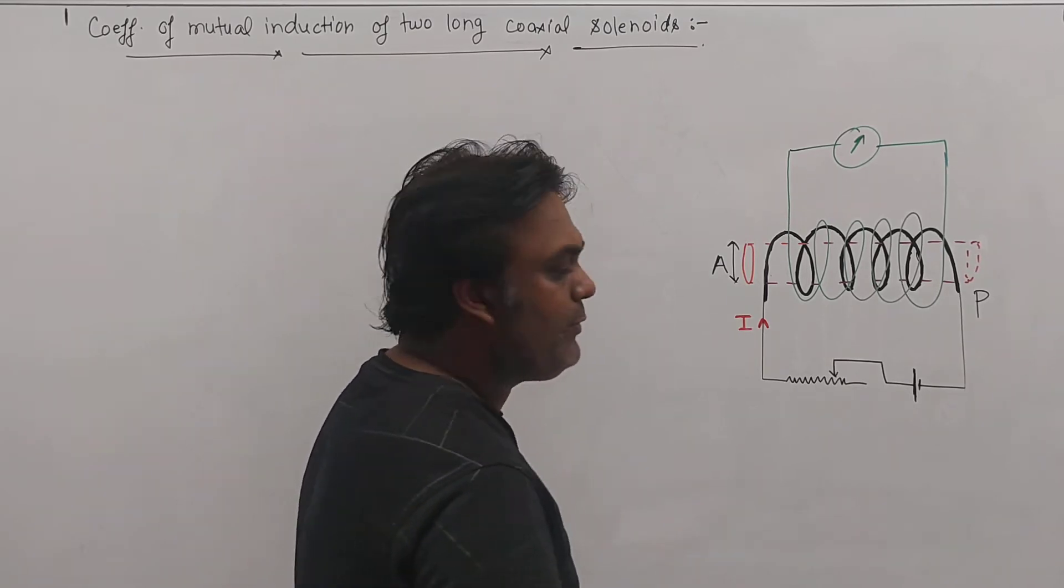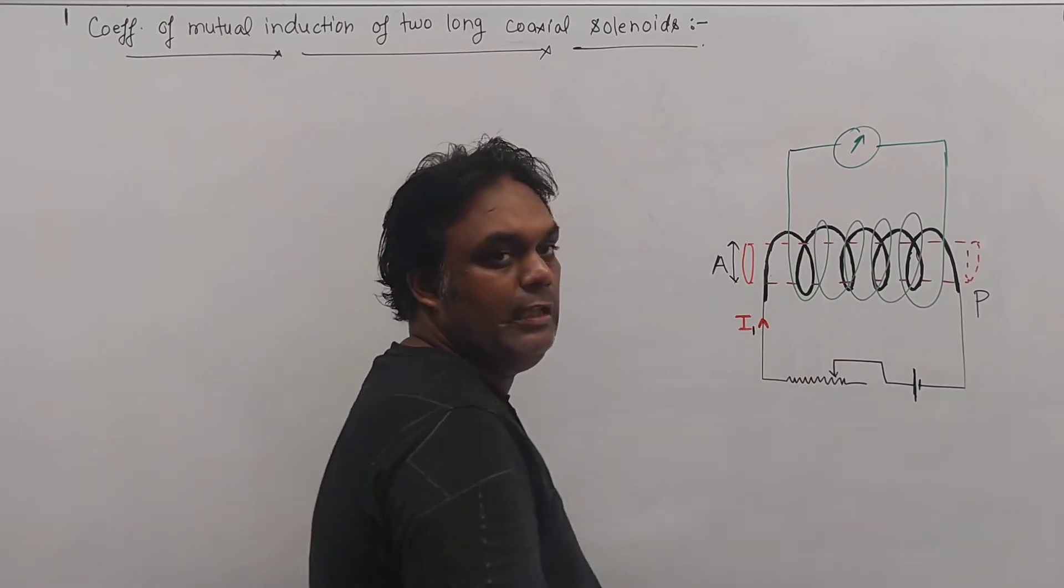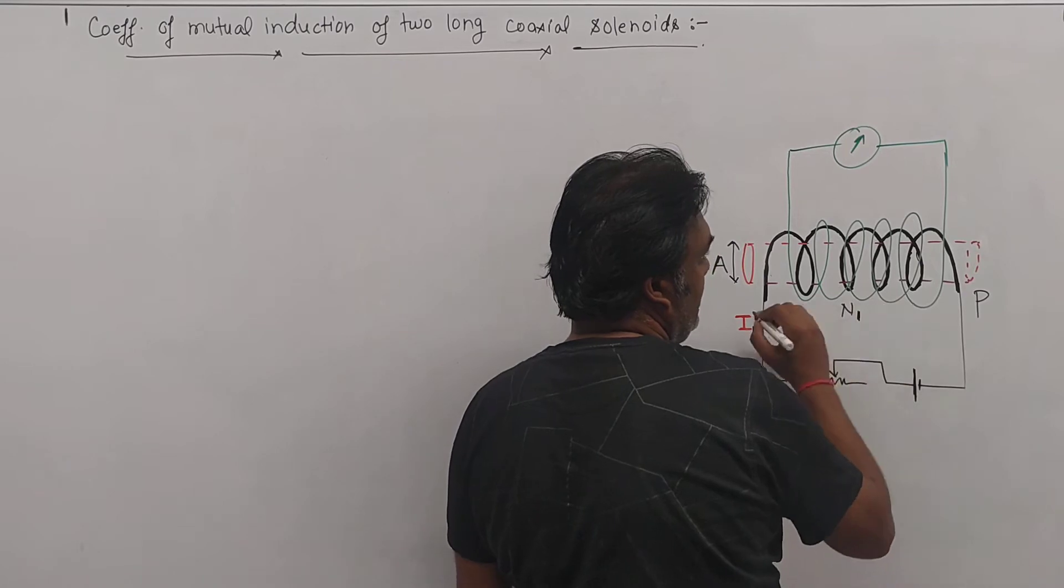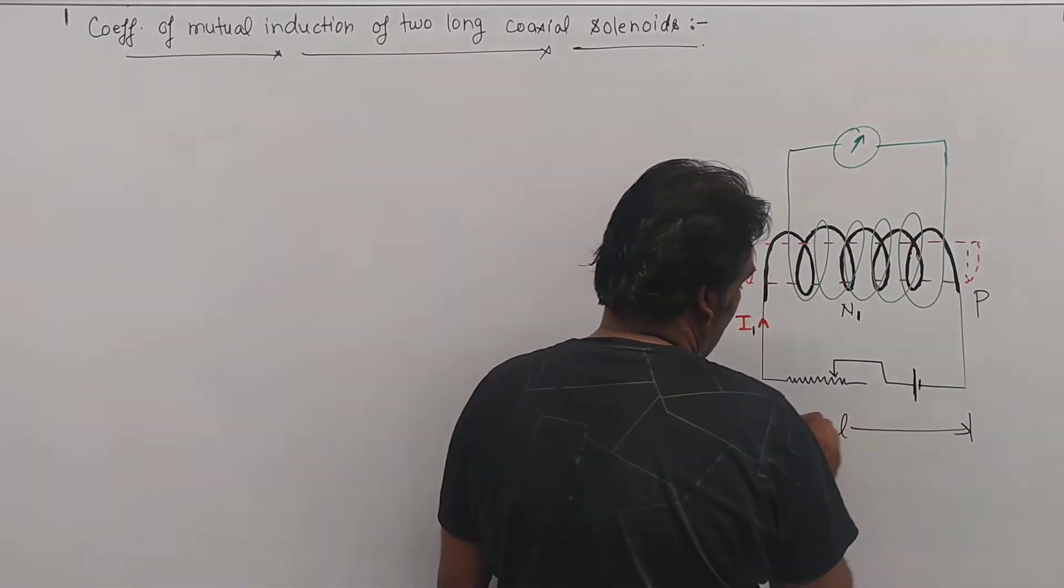So this black color coil is primary coil because current is flowing in this primary coil. So let us say that the current is i1 here and number of turns in this coil - let it be n1. The length of the solenoid, let us take it to be l for both the solenoids.